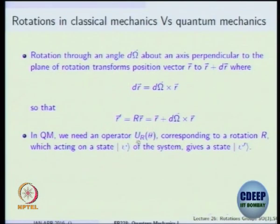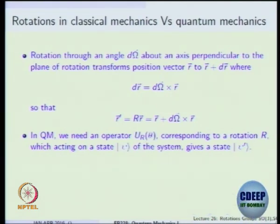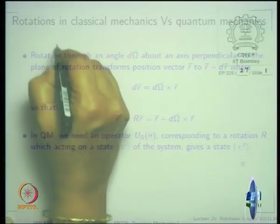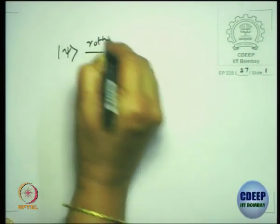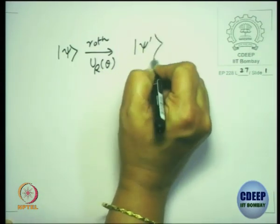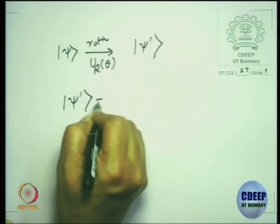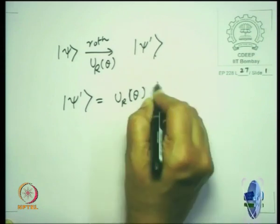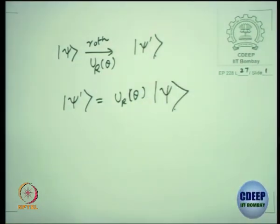In quantum mechanics, we want to write a unitary operator for rotation by angle theta. The subscript is for a rotation corresponding to a rotation R in physical space, which when acting on a state psi takes it to a new state psi prime. So you have a state psi, you perform a rotation by the unitary operator U_R(theta), and that gives you psi prime.